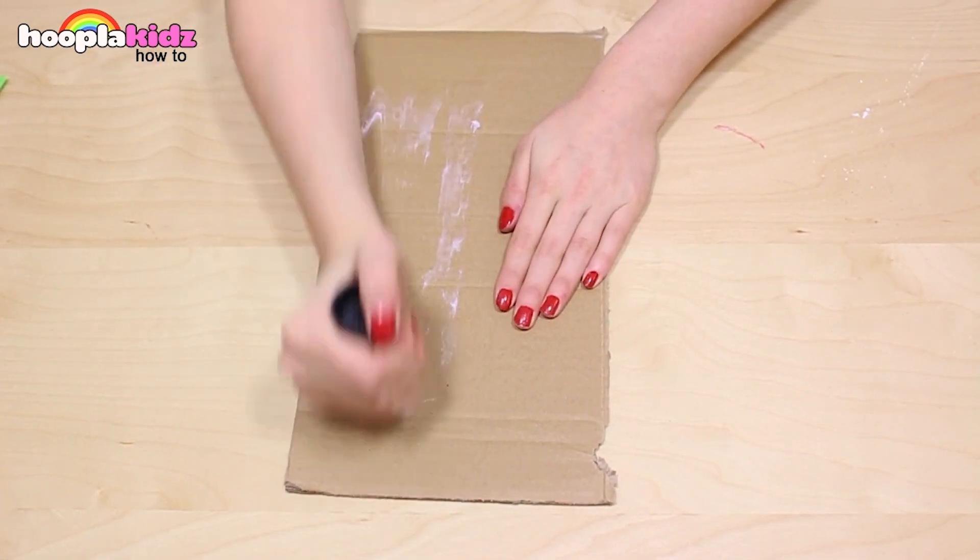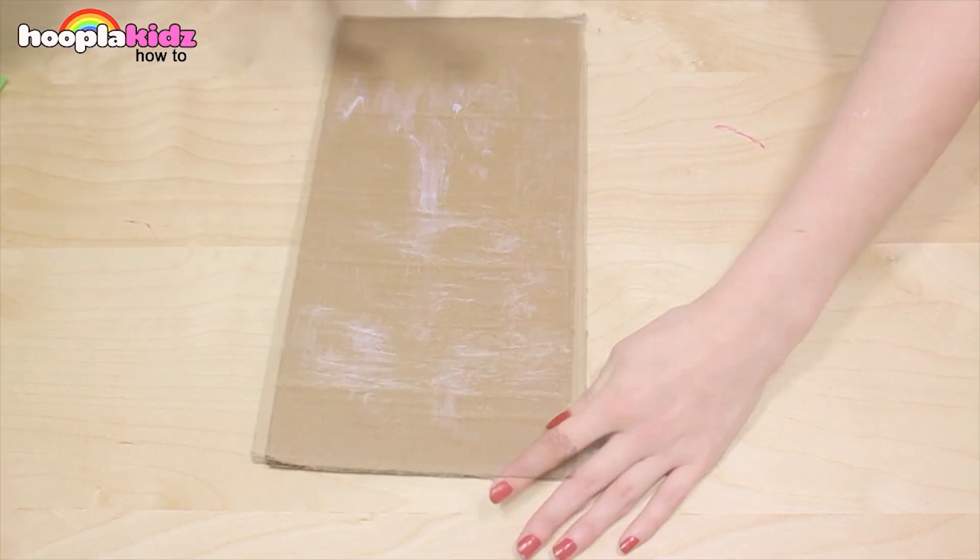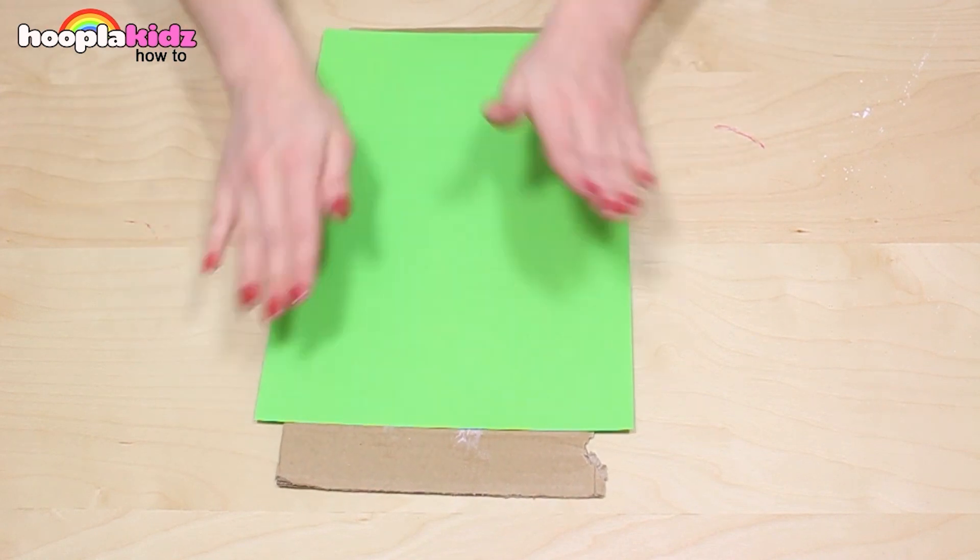So the first thing we want to do is glue our green paper to our cardboard. I'm starting by covering the cardboard with glue and then sticking the green bit of paper on top.